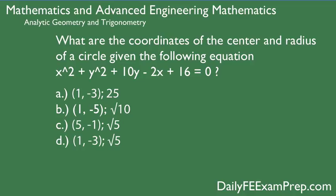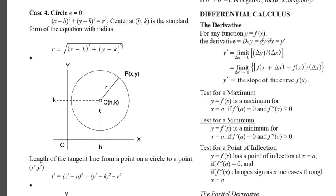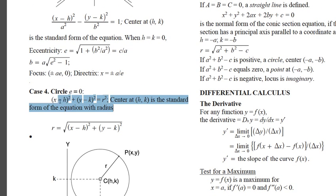This looks a little intimidating at first, but if you can break it down into a couple sub-problems, this is actually really simple. The first step is to reference the NCEES Supplied Reference Handbook that will be given to you on the exam. I've already pulled it up — it is on page 23 of the mathematics section. Here is the equation of the circle: x minus h squared plus y minus k squared equals r squared, where the center is given at h, k coordinates.